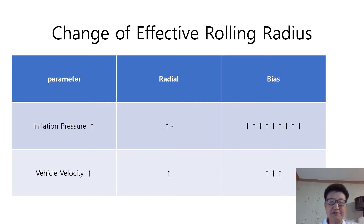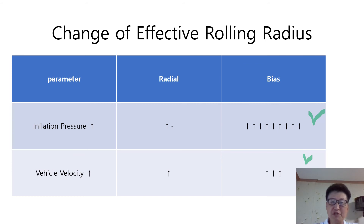All the discussions so far boil down to the table above. Bias tires are sensitive to both inflation pressure and vehicle velocity, and the rate of change in inflation pressure gives more effect to the effective rolling radius than the rate of change in vehicle velocity. Furthermore, in the case of radial tire, the effective rolling radius changes very little over various speed and inflation pressure ranges.